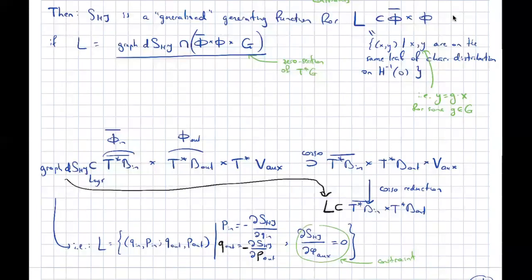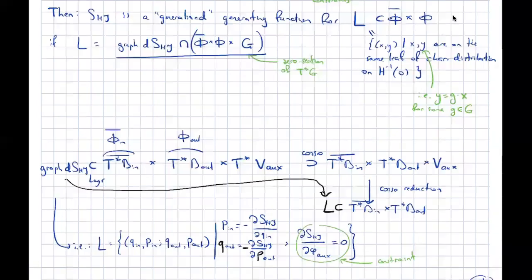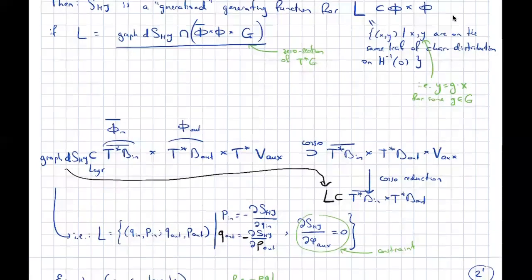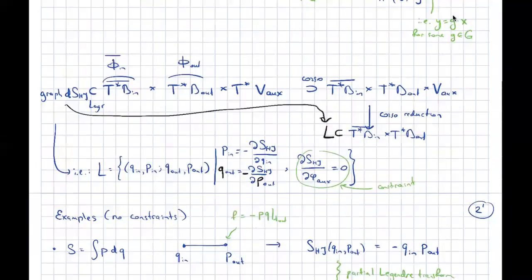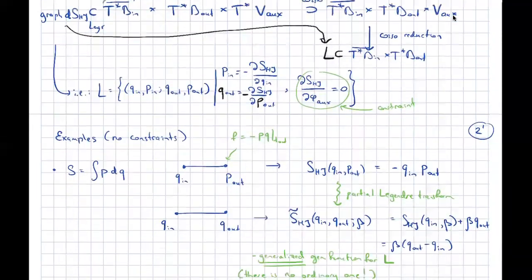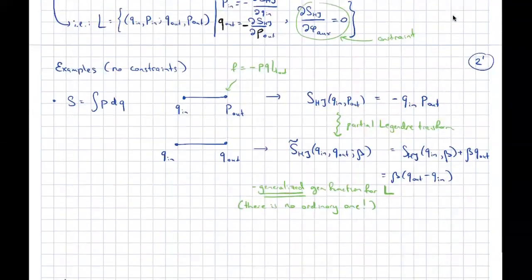The lemma is that the construction above gives me a generalized generating function for the evolution relation. Evaluating the original action on the solutions to the evolution equations — ignoring the constraint — gives me the generalized generating function for the evolution Lagrangian. Now, some examples.